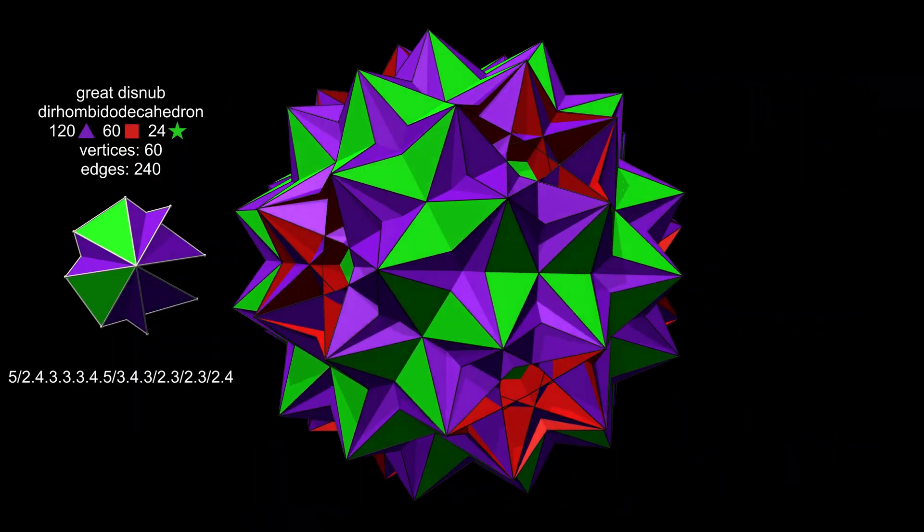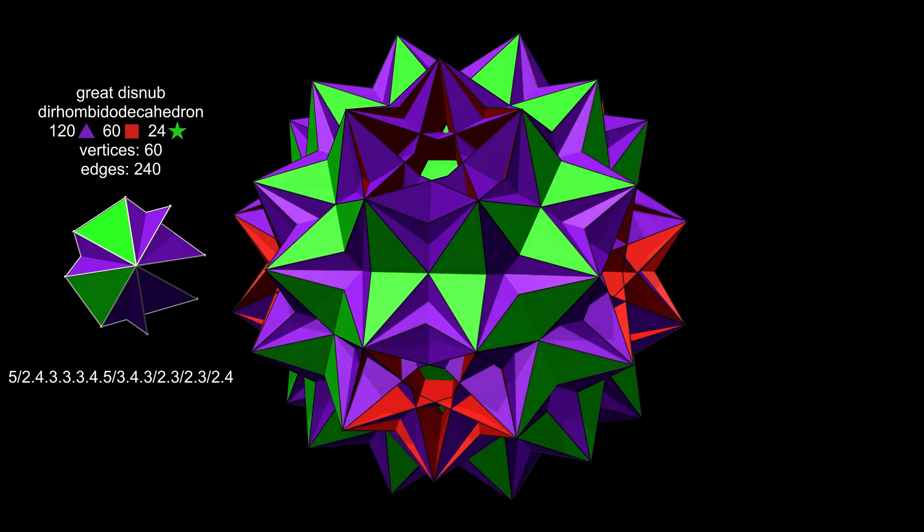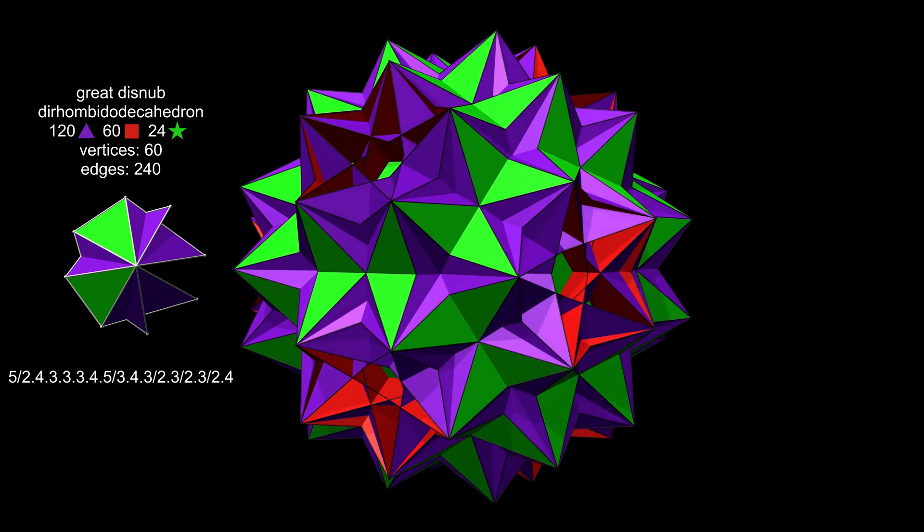Skilling's figure has 204 faces, 240 edges and 60 vertices. Twelve faces surround each vertex.